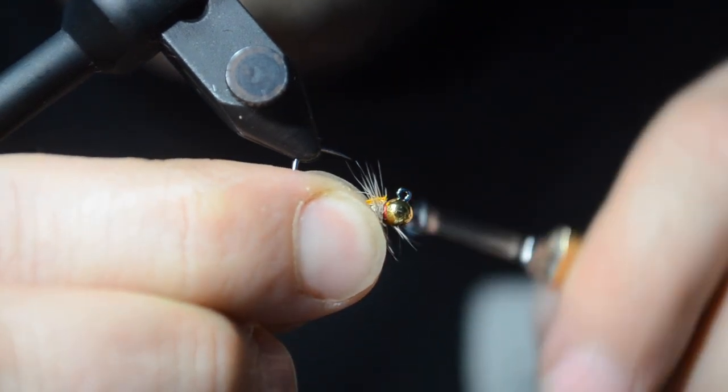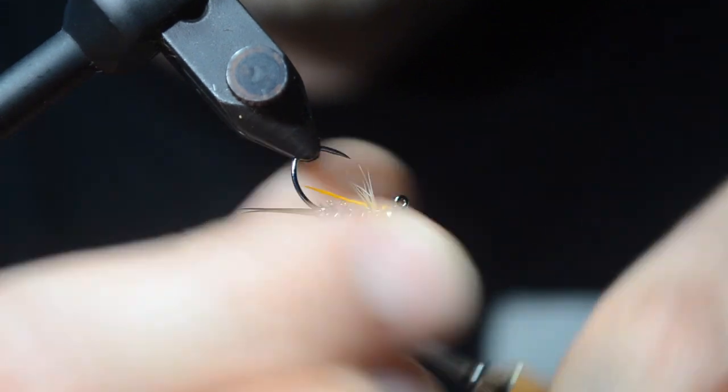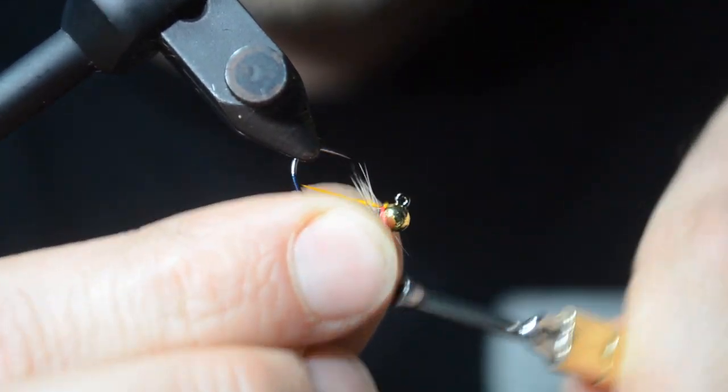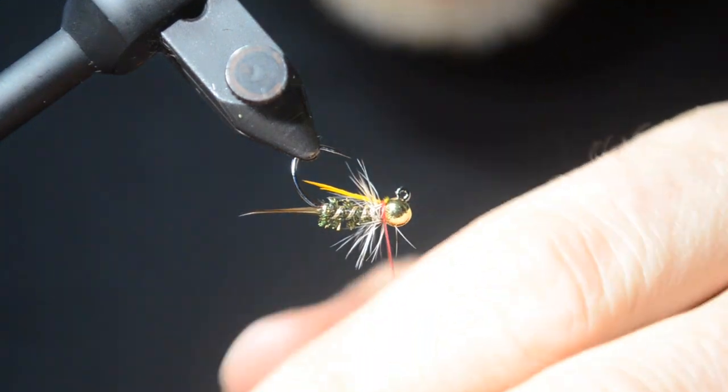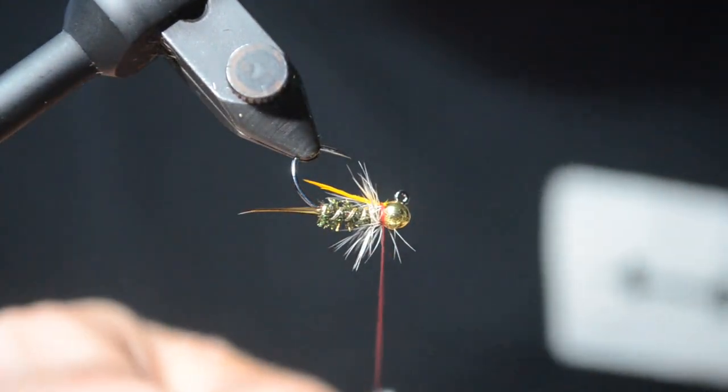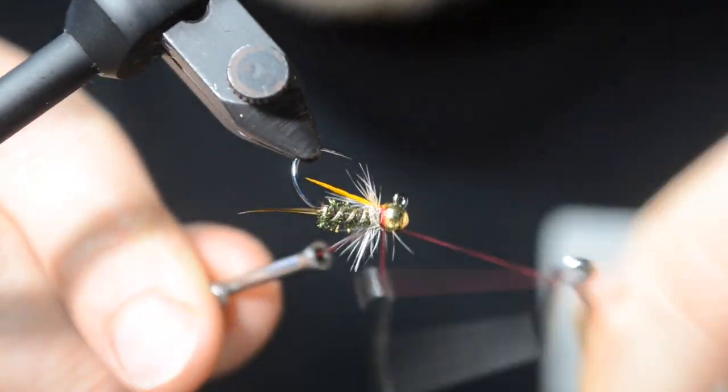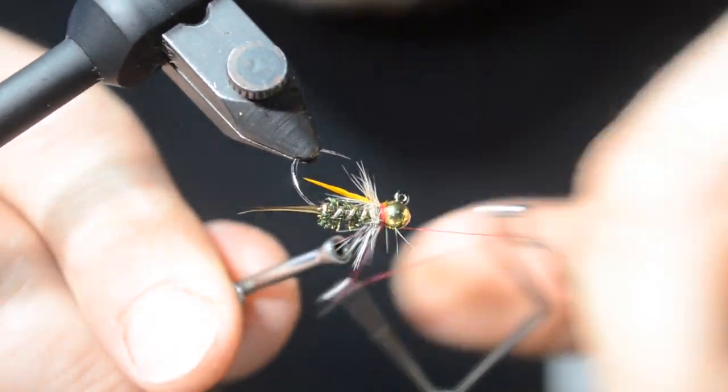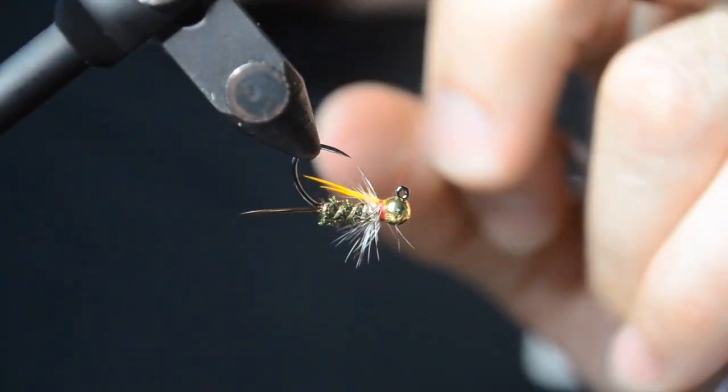And then we're going to build up a thread base. It's basically like a hot spot with these. And again, this is why I like the red. You can try different colors, but red's probably my number one right now. Go ahead and whip it. Clip your thread. And you're good to go with this one.